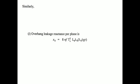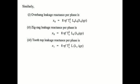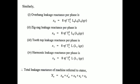With this, we have equations to find leakage reactance for different aspects: overhanging leakage reactance per phase is denoted X₀; zigzag leakage reactance per phase is denoted Xz (note: a correction — it should be Xz, not X₀); tooth-top leakage reactance per phase is denoted X₁; and harmonic leakage reactance per phase is denoted Xh. These are different cases of leakage reactance used based on requirements.